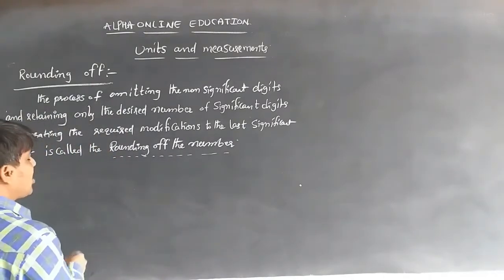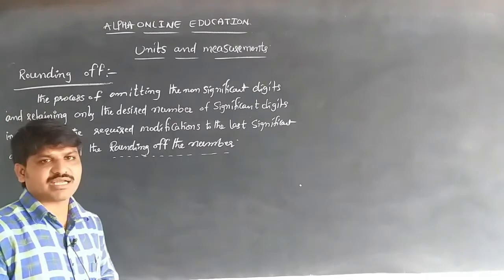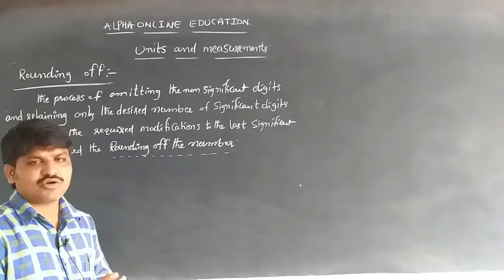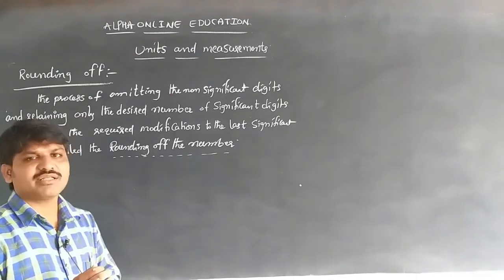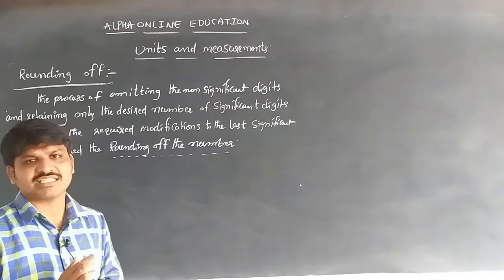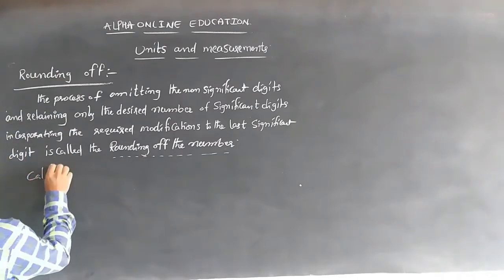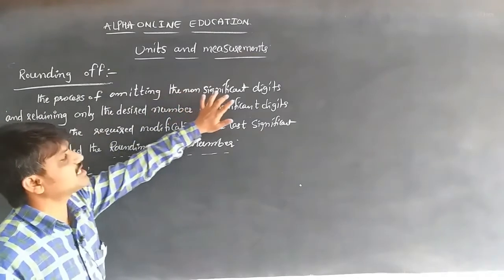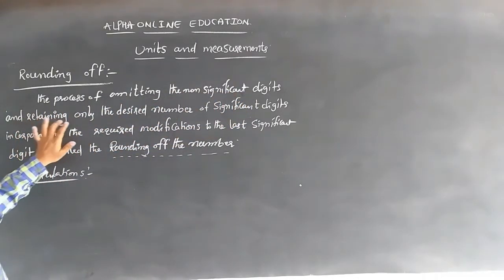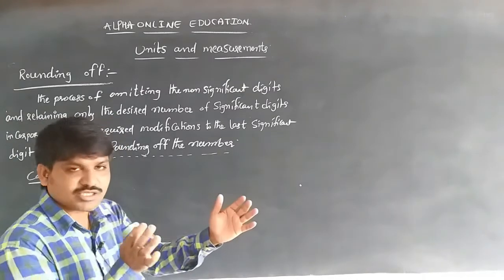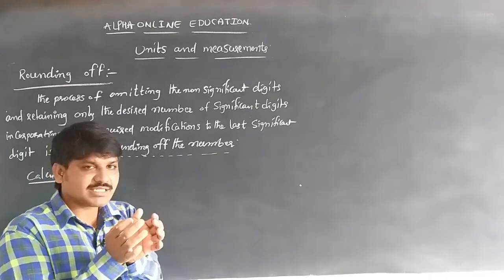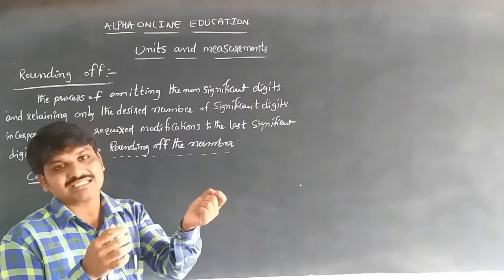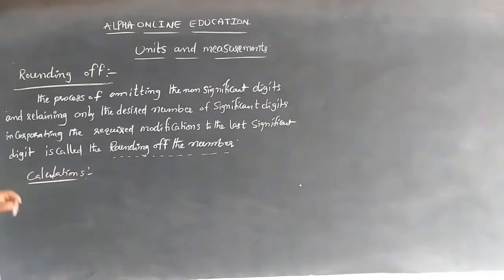We will see how to eliminate non-significant figures by doing rounding off when adding, subtracting, multiplying, dividing, or taking square roots of numbers with decimal values. The required modification is done to the last digit of the significant figures.